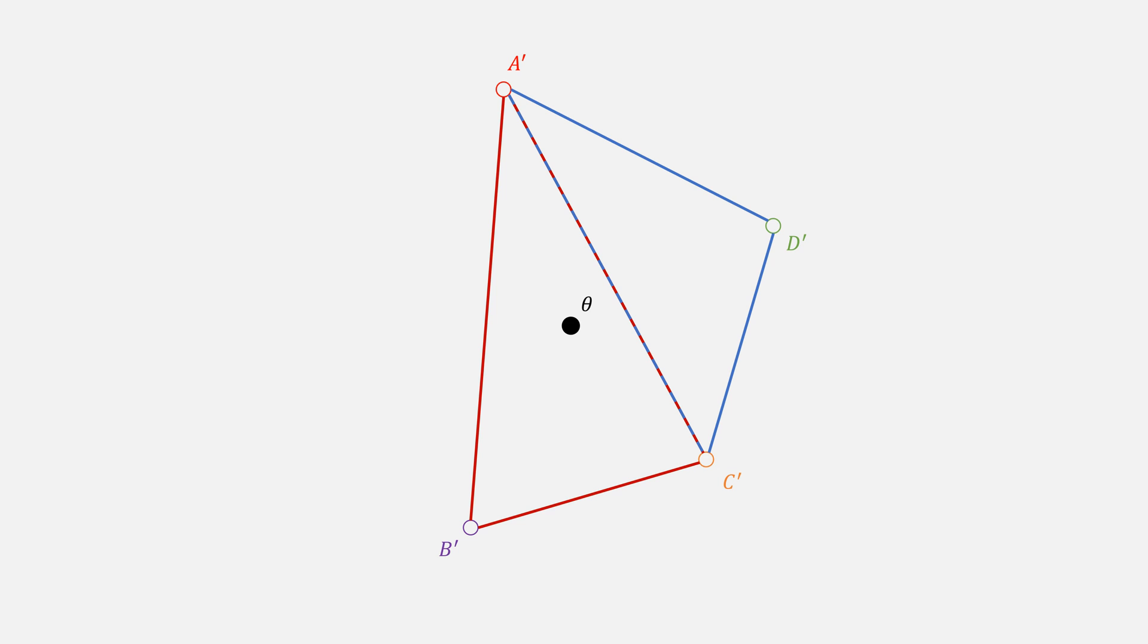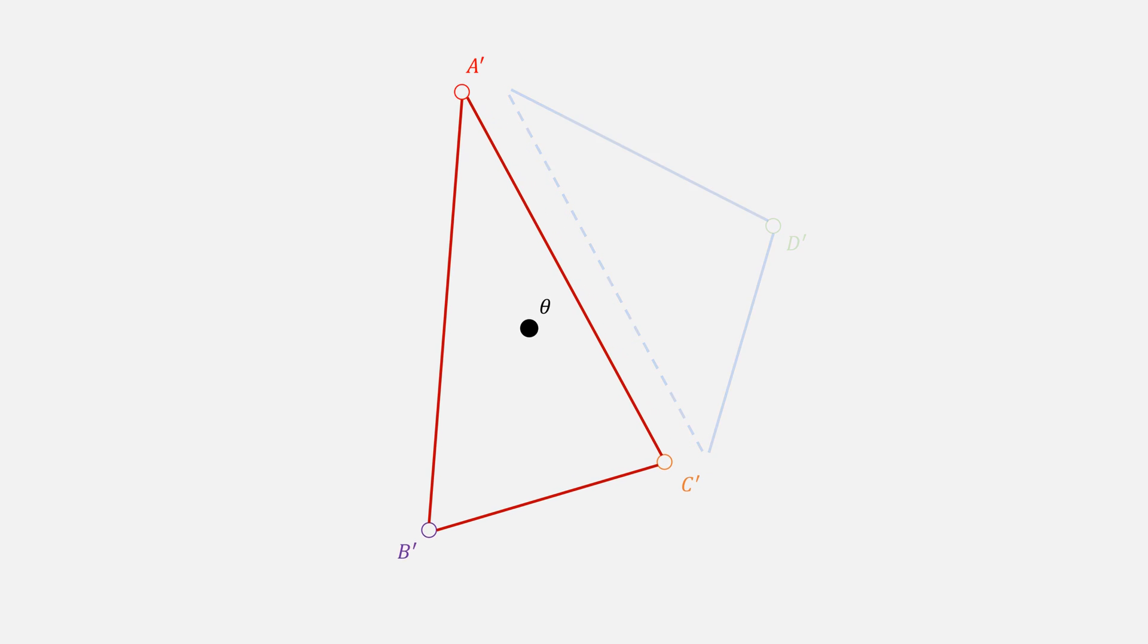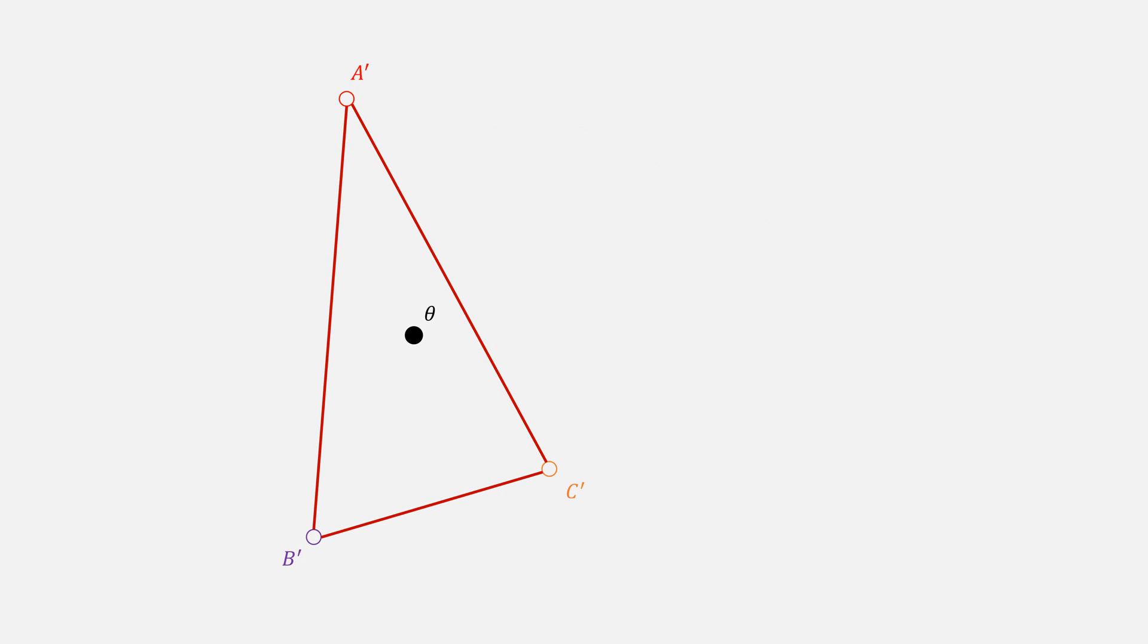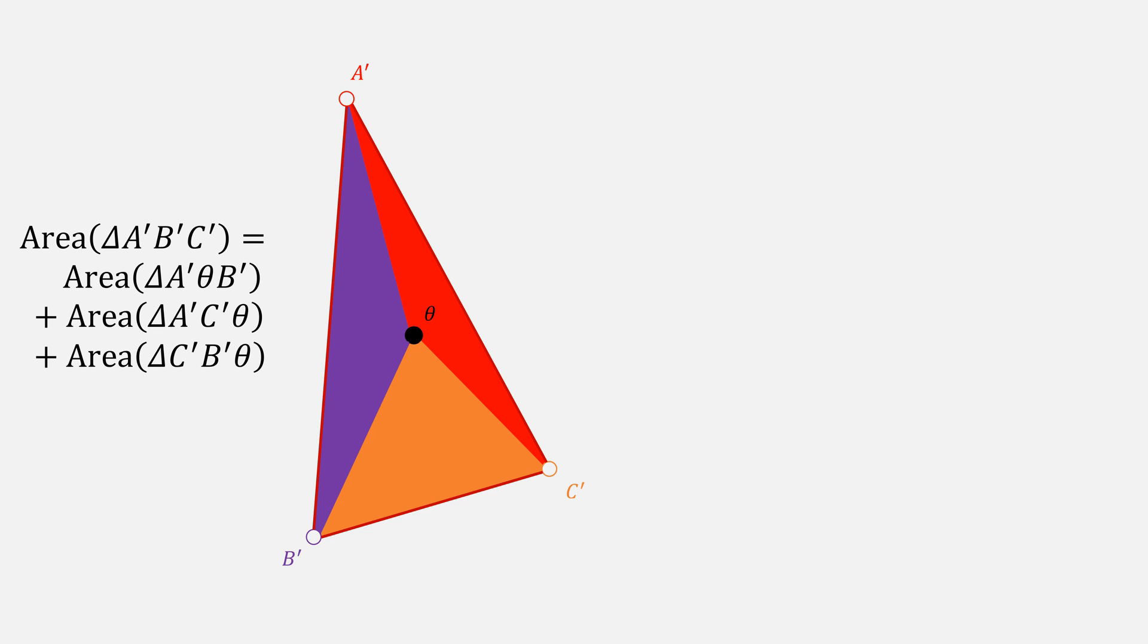Going back to our triangle examples, let's just focus on one triangle. Then, if we draw points to that center point, which we'll just call theta, and compute the areas around that, the area of the whole should be equal to the areas of the sum of its parts.